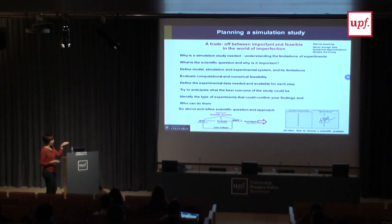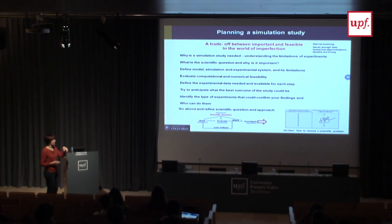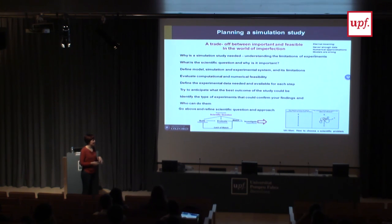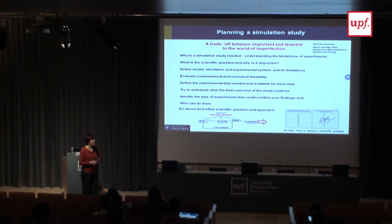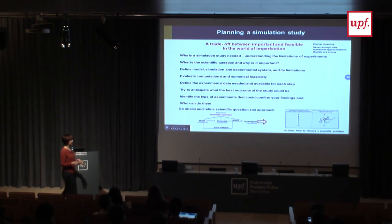Usually you need to refine the scientific question because you are overly ambitious or not ambitious enough - it's an iterative process. I really recommend Uri Alon's papers on how to choose a scientific problem. He's a genius communicator with videos online on systems biology. He has a figure showing how you think a scientific project will go from A to B in a straight line, and how it actually usually goes, ending up at C without knowing how you got there. That is especially true for PhDs.